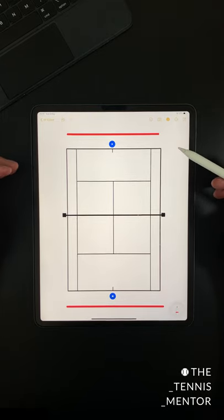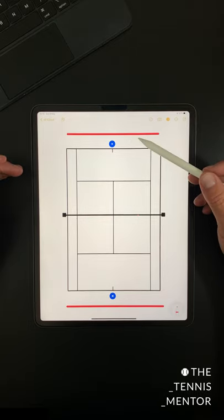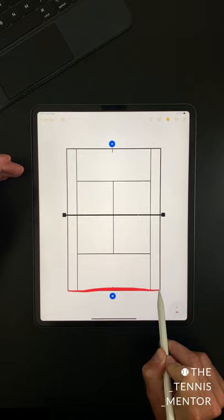If you can push your opponent behind the red line, you win the point. If you and your opponent are struggling to push each other behind the line, another way that you can do this drill is by using the baseline as your barrier.